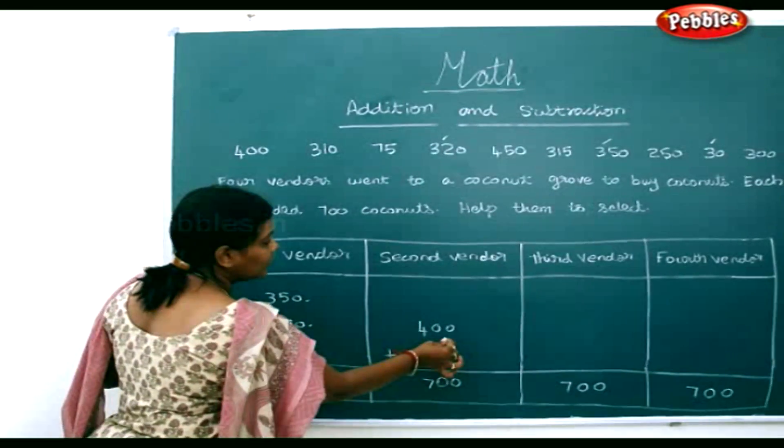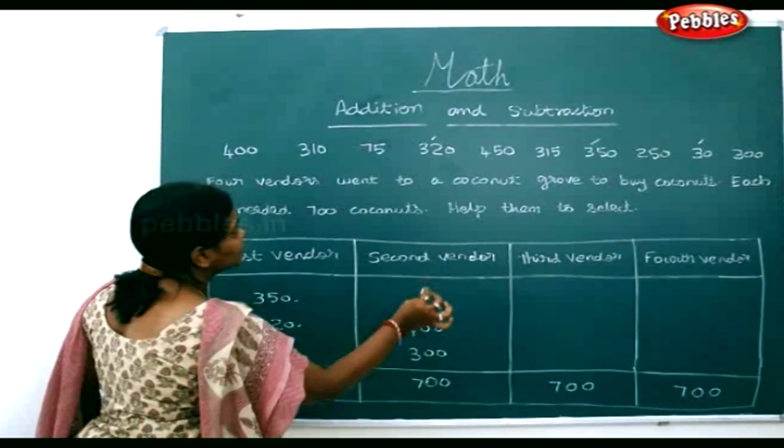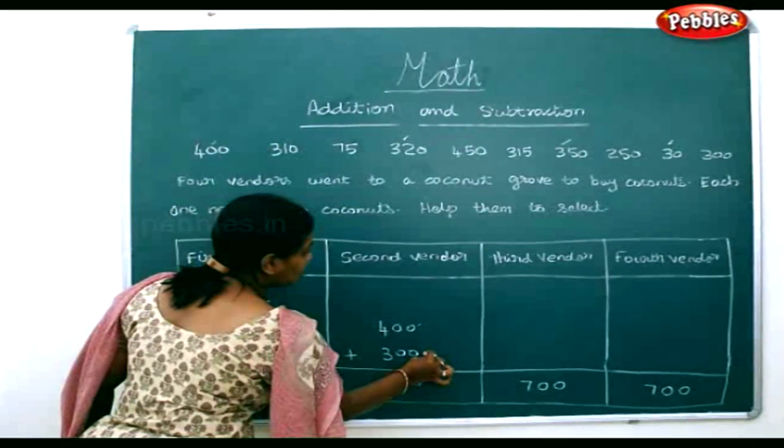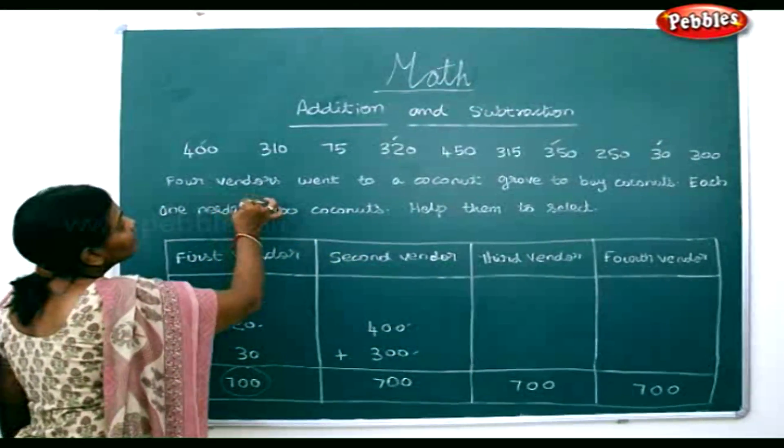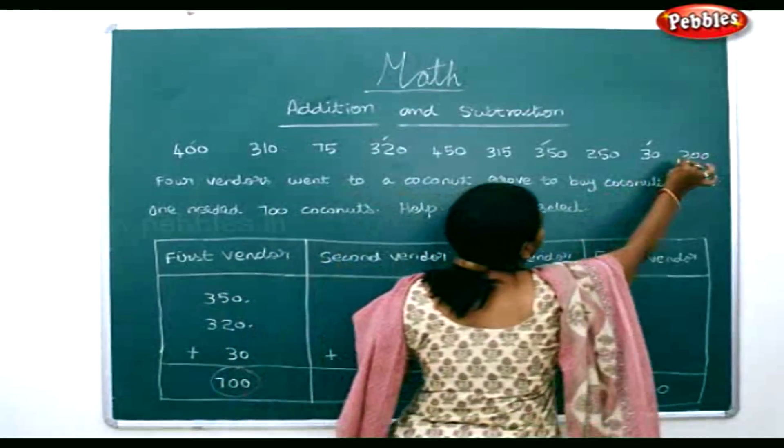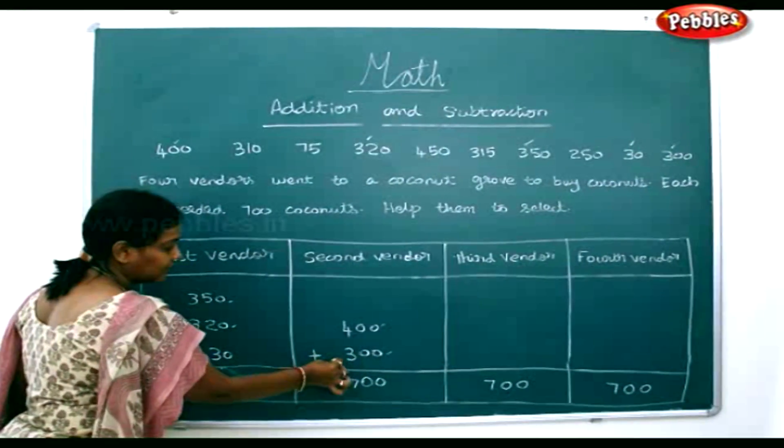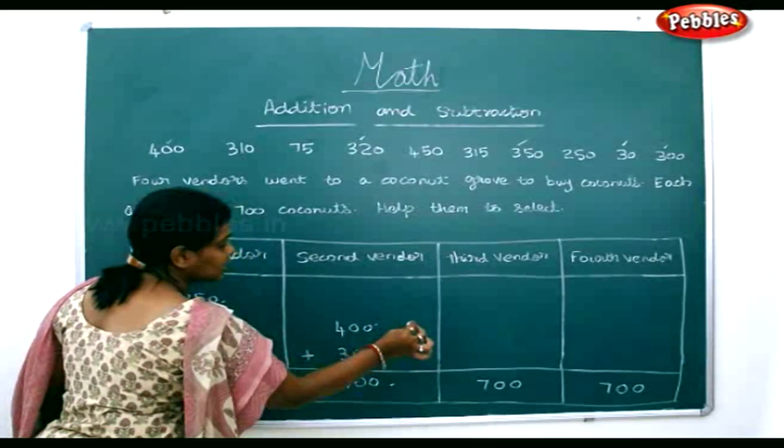The second vendor, he went and took 400 coconuts first. Then he took 300 coconuts. With this 400 and 300, he formed 700 coconuts together.